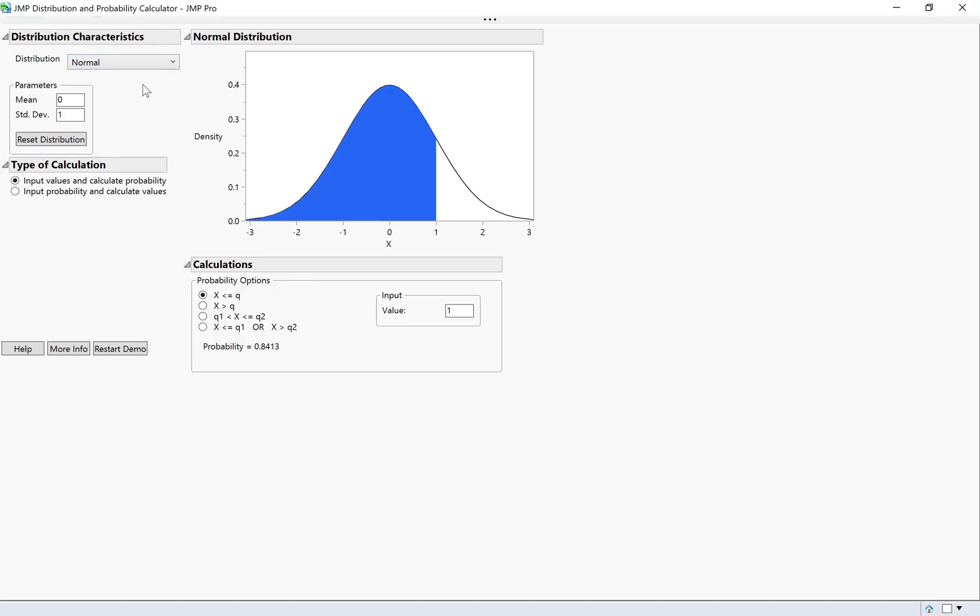So it's a normal distribution with a mean of zero and a standard deviation of one, but I am going to change the type of calculation. Instead of input values, I'm going to do input probability, and I'm going to change this to central probability. So if I put in the central probability as 0.95, then that's telling me how many standard errors I have to go out to get 95% of the values. The empirical rule tells us that it's about two, and it is. It's very close to that, but a more precise calculation would be 1.96.